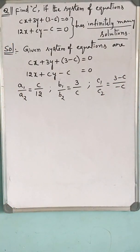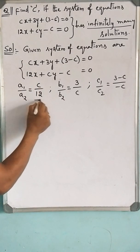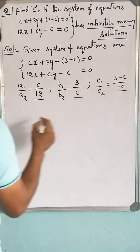If two equations have infinitely many solutions, these three ratios must be equal.